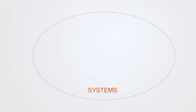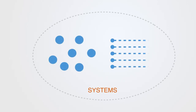A system is a set of parts called elements and the connections between these parts called relations. Through these relations the elements are interdependent in affecting a joint outcome. By interdependent we mean that if we change the state of one element, this will affect the state of other elements within the system.